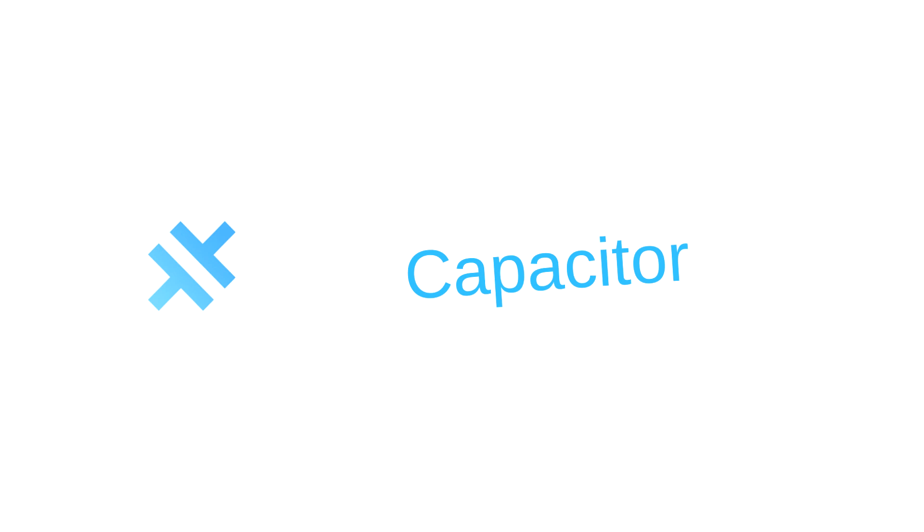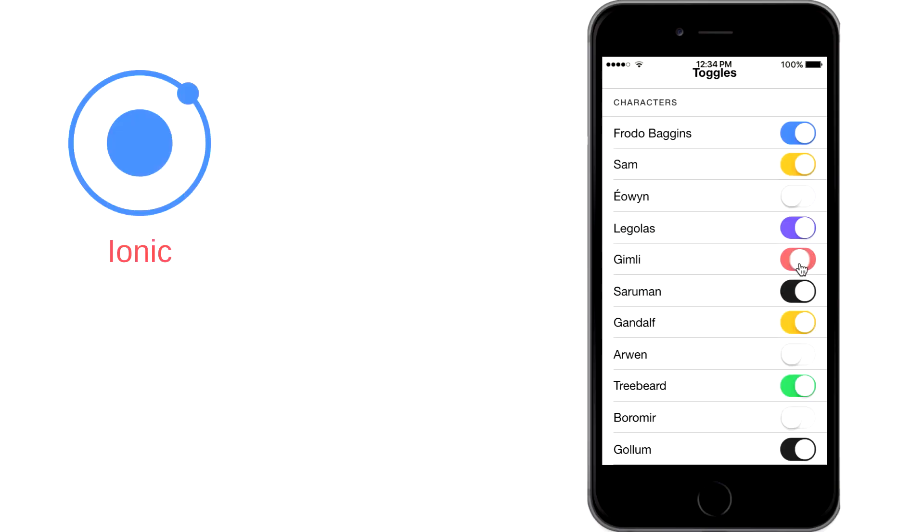So Capacitor is something like a replacement for Cordova, but it not only works with mobile native features — it also supports desktop native features. But of course, this is the world of JavaScript, and if you want, you can still use Cordova, or you can have a mix of both.